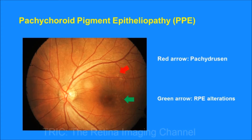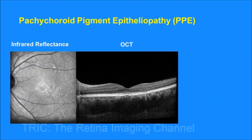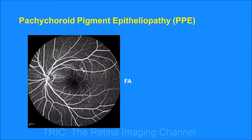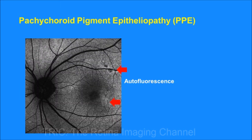This is another patient with pachychoroid pigment epitheliopathy. The red arrow shows pachydrusen, whereas the green arrow shows RPE alterations. The infrared image shows hyper- and hypo-reflectivity suggesting RPE alterations. Fluorescein angiography shows a window defect but no leak. Autofluorescence shows hypo-reflectivity at the areas of RPE disturbance.